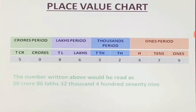Suppose we have to write a number in this chart. We write 5 at the ten crores place, 0 at crores, 8 at ten lakhs, 6 at lakhs place, 3 at ten thousands place, 2 at thousands place, 4 at hundreds place, 7 at tens place, and 9 at ones place. The number written above would be read as 50 crore, 86 lakh, 32,479.